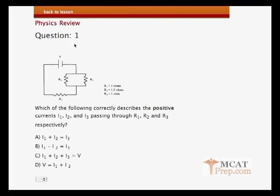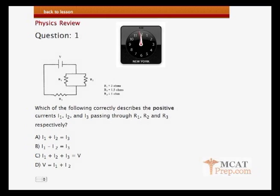Question 1. So we have a diagram. Here's V, the voltage for the battery. We have a wire. We have resistors R1, R2, and we have the resistor R3 here. The values are R1, 3 ohms, R2, 1.5 ohms, R3, 1 ohm. Question: Which of the following correctly describes the positive currents I1, I2, and I3 passing through R1, R2, and R3 respectively? You have 30 seconds. Begin now.